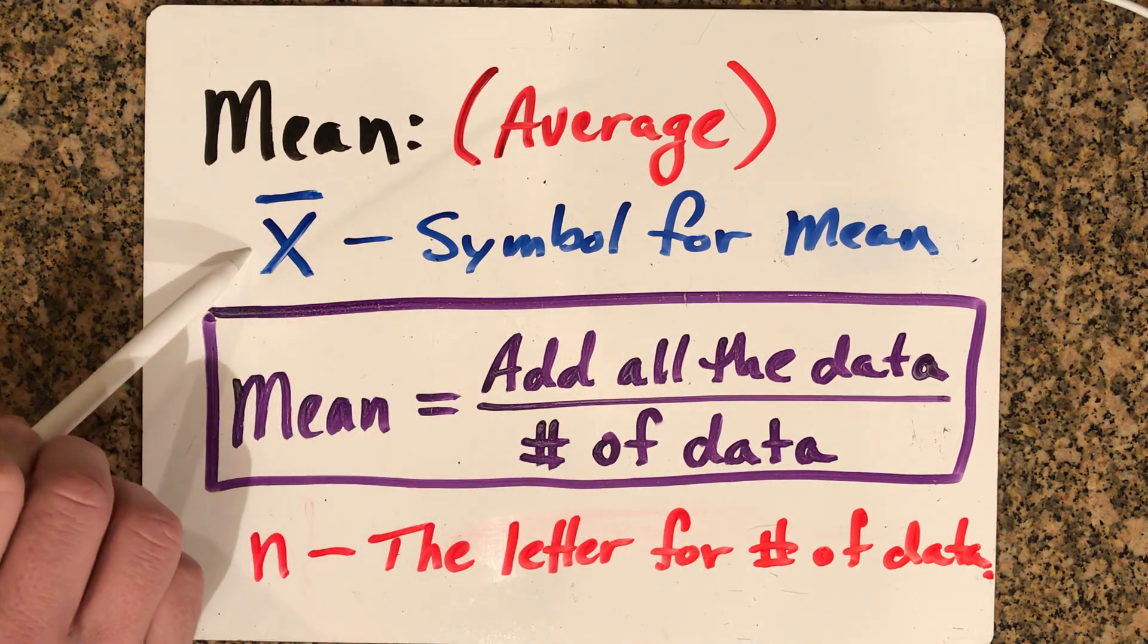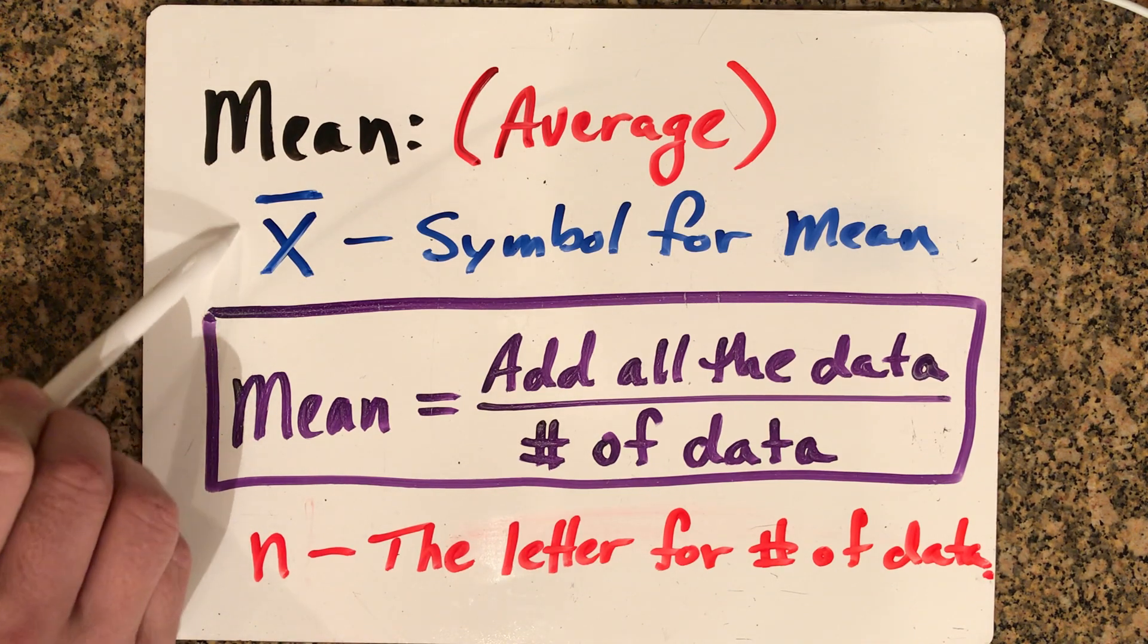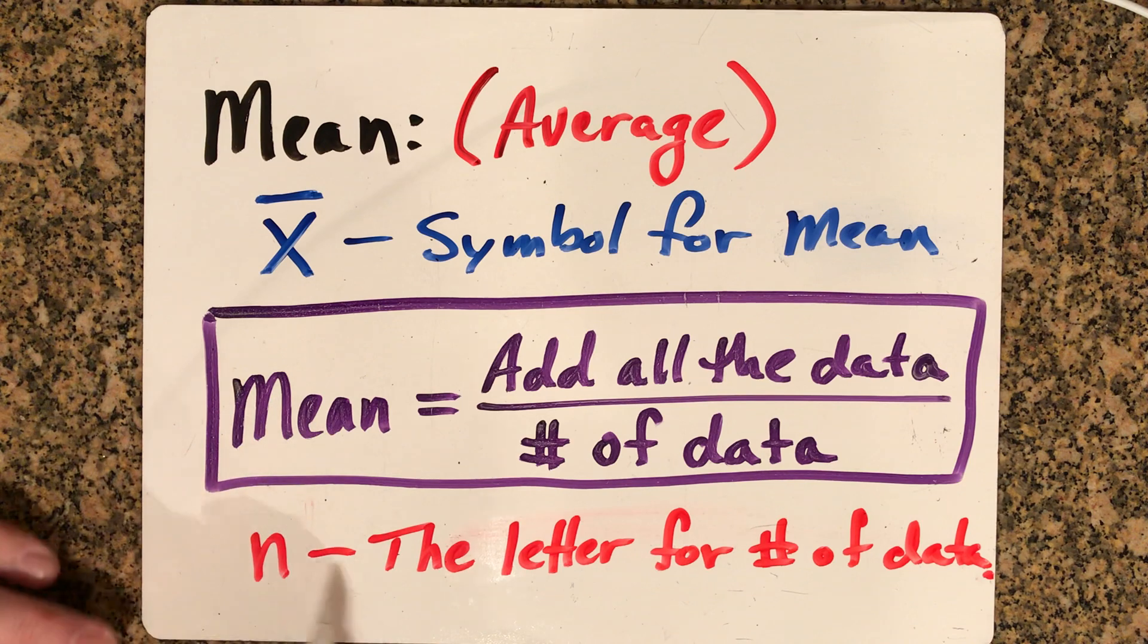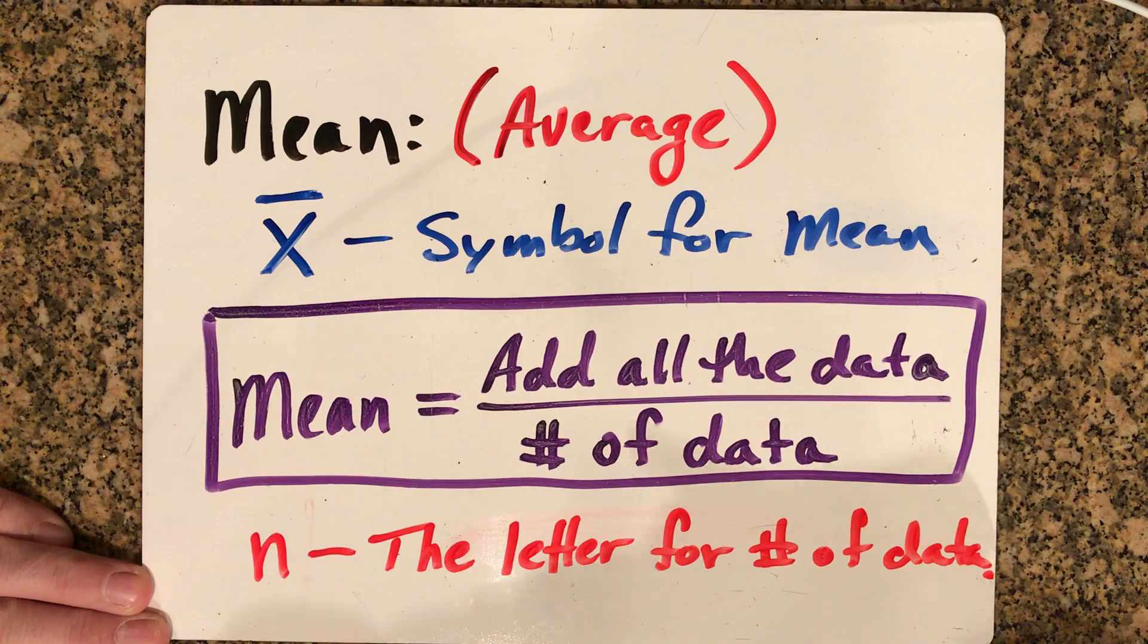There's a symbol that represents average: X with a bar over it (x̄). If you ever see this, it's referring to the average or the mean. The letter n will show up in some formulas as well. n is the number of data in your data set.